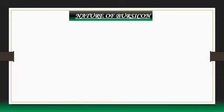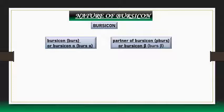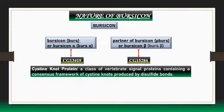Regarding the nature of Bursicon: functional Bursicon is a heterodimer consisting of two cystine-knot subunits referred to as Bursicon-alpha (BURS) and Partner of Bursicon, called P-BURS or Bursicon-beta, as indicated by Mendive et al. in 2005. BURS and P-BURS are encoded by two individual genes: CG13419 for BURS and CG15284 for P-BURS. Cystine-knot protein is a class of vertebrate signal proteins containing a consensus framework of cysteine residues connected by disulfide bonds. Both BURS and P-BURS belong to the class of cystine-knot proteins.